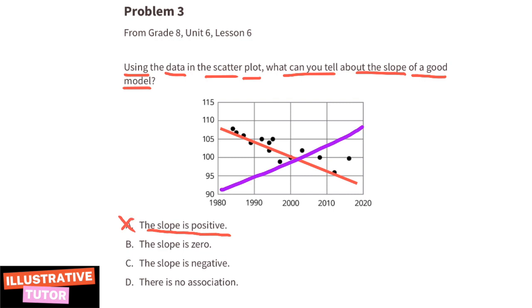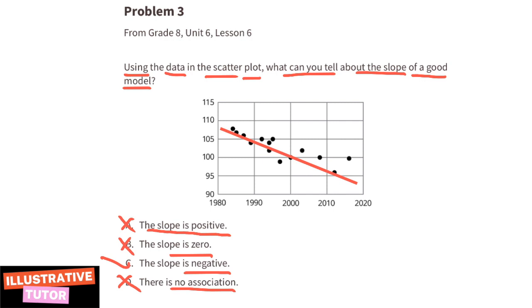Part b: the slope is zero. The data in this scatter plot shows a negative slope, so we know it can't have a zero slope. Part c: the slope is negative. We've already determined that the slope of this line is negative. You can also tell by looking at the axes — as the horizontal values increase, the vertical values decrease, confirming a negative slope. Part d: there is no association. That's not true because the data in this scatter plot actually forms a slope.